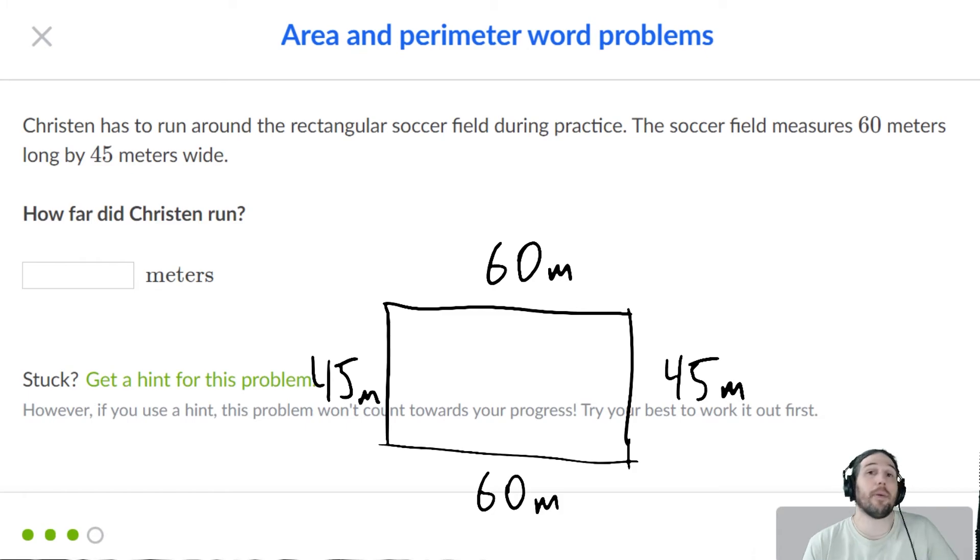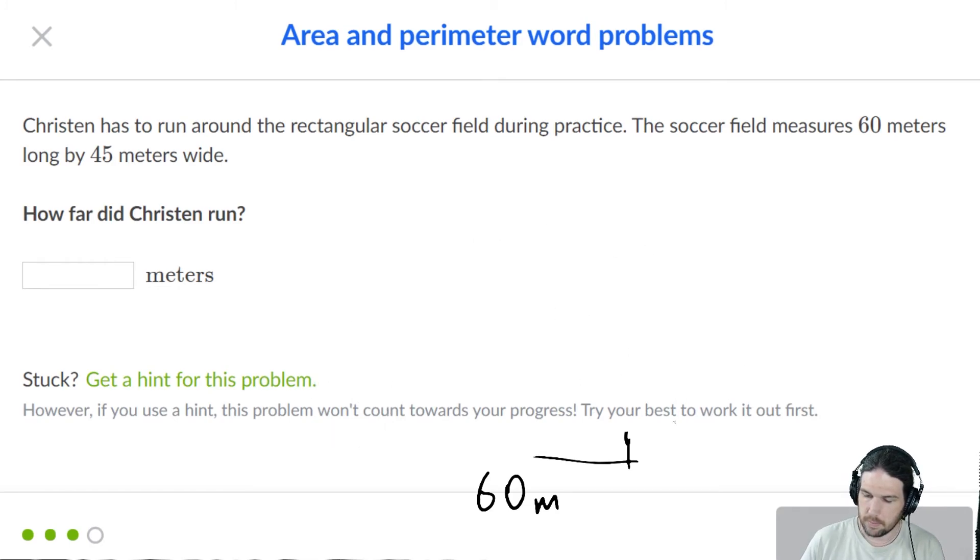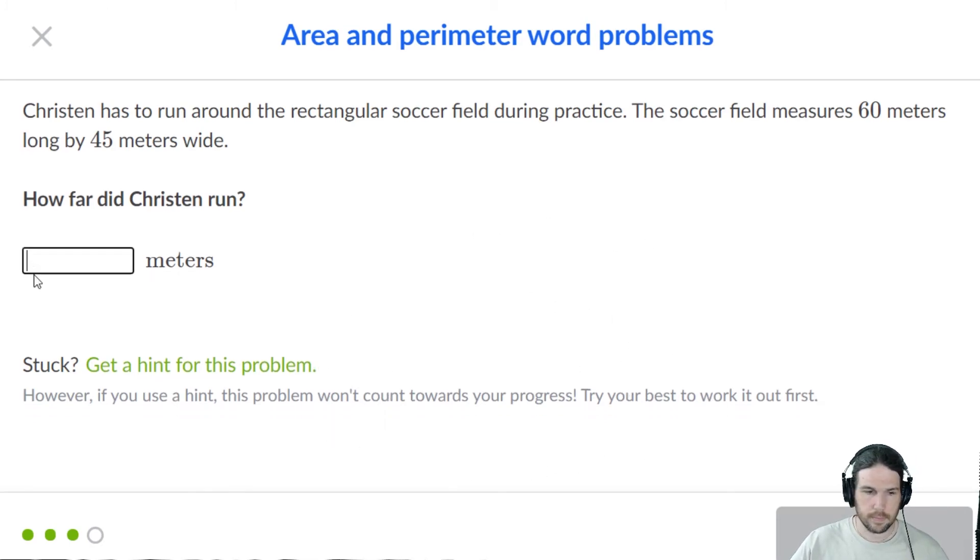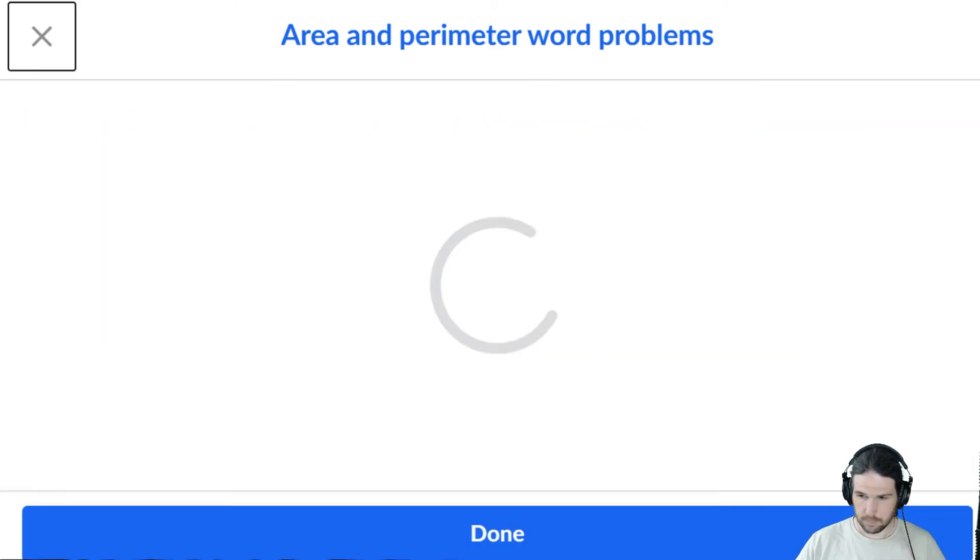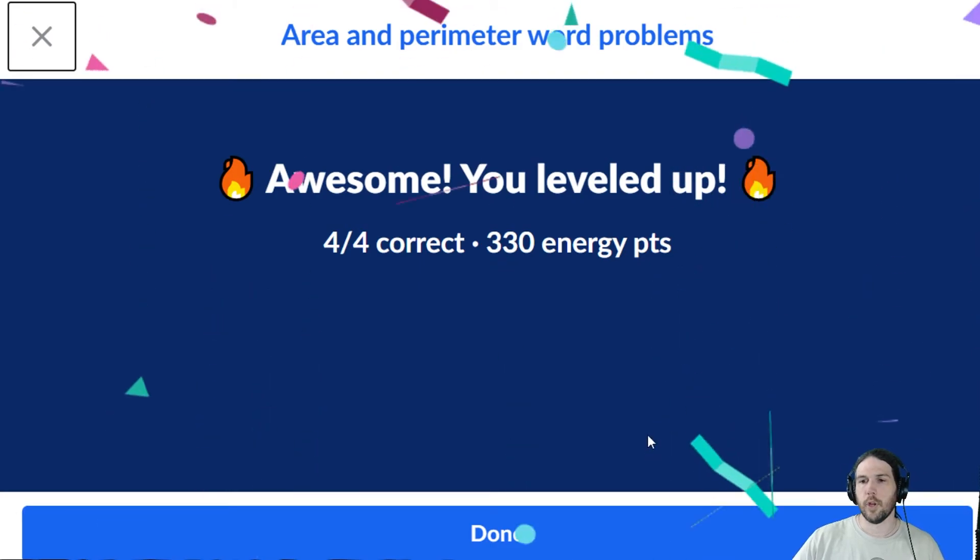And he just has to run around it once. I've been tricked by problems like that before. If it's said does he run around twice or three times, you've got to remember that multiplication. It's the kind of thing that Khan Academy pulls now and then. But it does say on the problem that we are only going around it once. 60 and 60 is 120. 45 and 45 is 90. 90 and 120 is 210 meters. No problem.